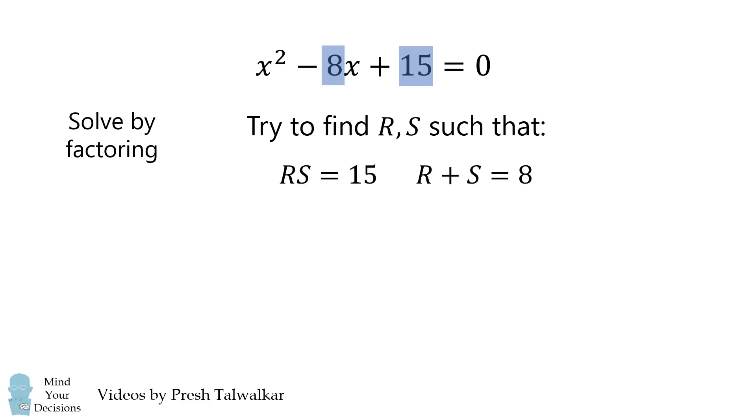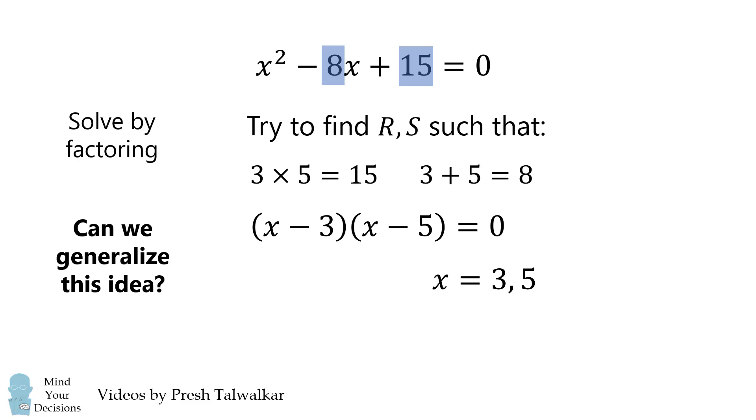Before we get to the method, let's do a motivating example. x squared minus 8x plus 15 is equal to 0. We'll solve this by the method of factoring. We want to find two numbers such that their product is 15 and their sum is equal to 8. We can do this by considering the factors of 15. We readily get two numbers of 3 and 5. Therefore, we can factor the original equation, and we'll get two solutions of 3 and 5. Students are taught this method. The question is can we generalize the idea?